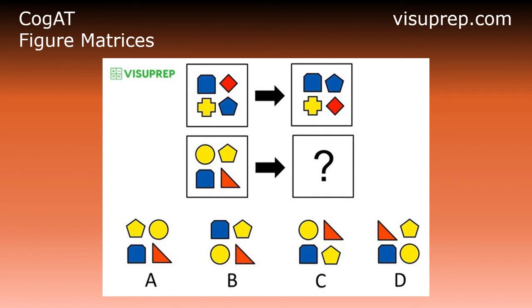The figures on the top row are related. Which answer should go in the box with the question mark so that the figures on the bottom row are related in the same way as the figures on the top row?